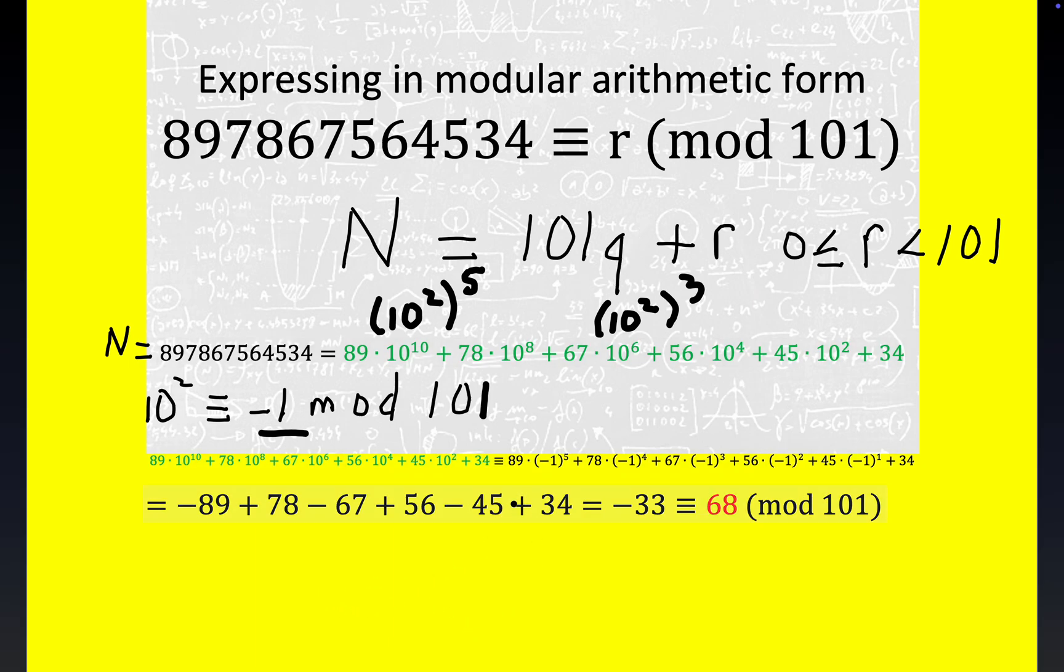And you can see what happens right here, folks. You got 89 times minus 1 raised to the fifth power. Well, that's minus 89. And you can see the rest of it.